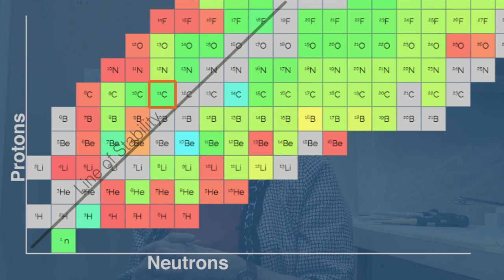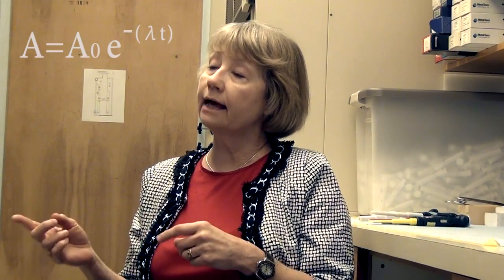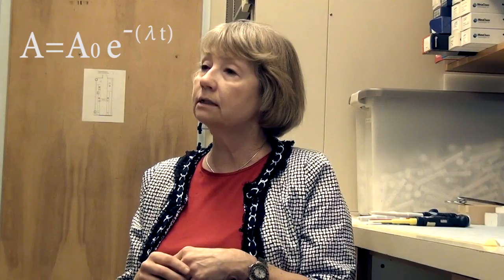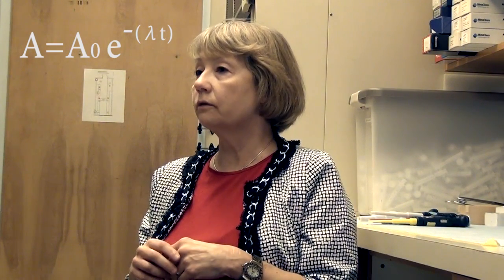The half-life is governed by how fast it decays, and it decays by e to the minus lambda t, and lambda is equal to the log of 2, natural log of 2 over the half-life.